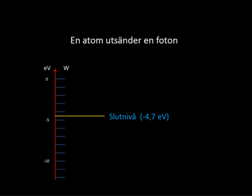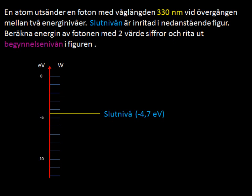Welcome back. We'll be looking at an atom that emits a photon today. We'll be given its initial state, its final state, and the wavelength of the photon, and we'll be asked to calculate the energy of the photon. We have an atom, and a photon is emitted. The wavelength of the photon is 330 nanometers, and the initial state is going to be shown as well as the final state. We want to calculate the energy to two significant figures.